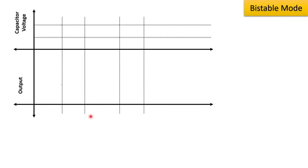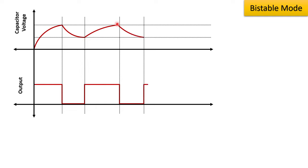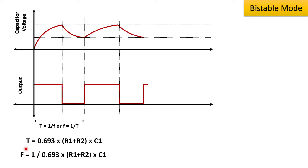In the astable multivibrator, both states are unstable. Once the voltage across C1 reaches 2/3 Vcc, the output goes to 0 and the capacitor starts discharging. Once it reaches 1/3 Vcc, the output goes back to 1. This keeps repeating and gives us pulses or square waves at the output. One cycle of the square wave is found using: F = 1 / (0.693 × (R1 + R2) × C1).